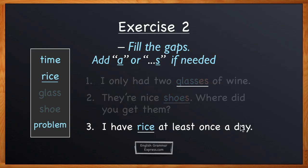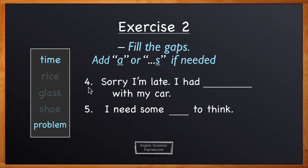Sentence number four: Sorry I'm late, I had something with my car. We have two options here and the correct word is problem. Problem is countable and we can use it here in either the singular form or in the plural form.